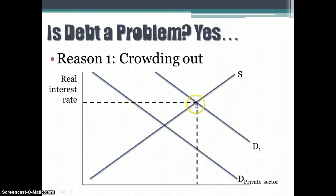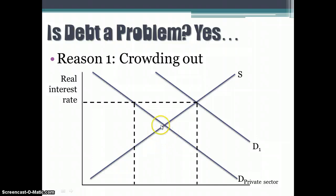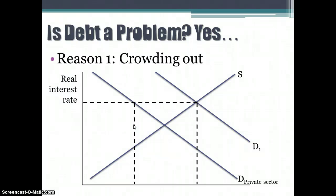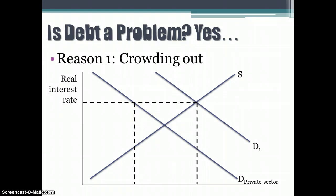The market has moved to a point where there is now a higher interest rate. The government is happy to pay it, but private industry and private borrowers do not want to borrow at the new higher rate — they only want fewer loanable funds. So we see a movement away from loanable funds for the private market. Private loanable funds lead to investment, and investment leads to increases in potential output and long-run economic growth. So continual government deficits and accumulation of debt can have this crowding-out effect, reducing private investment and slowing economic growth.